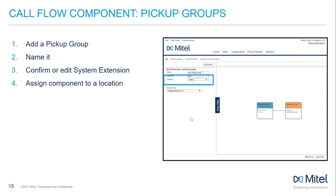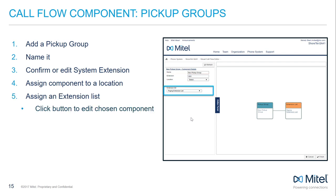Some components need to be assigned to a specific location, so assign pickup groups to an existing location. Next, assign an existing extension list from the Extension List drop-down menu. We won't be able to complete programming of a pickup group without assigning an existing extension list to it, so it makes sense to create the list first. Once you click Finish and save your changes, users in this list will be able to pick up calls to this group.